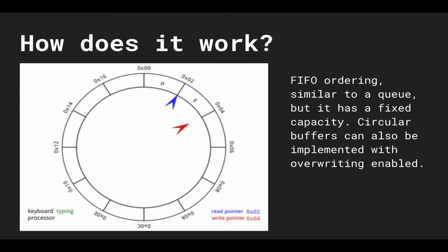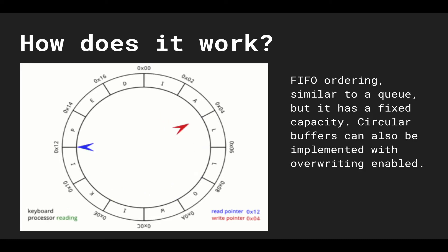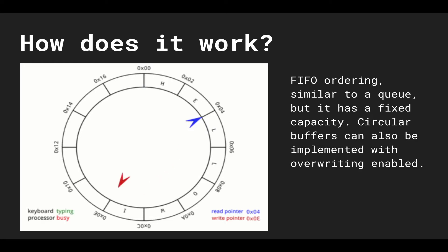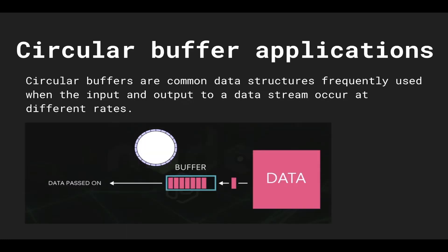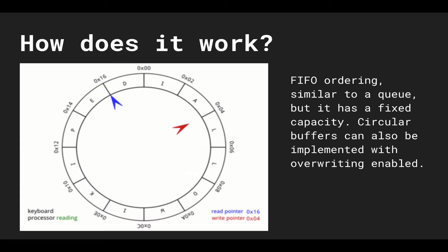The way it works is similar to a queue — it has first in first out ordering. Circular buffers can be implemented with overriding enabled or disabled. If it is disabled, then it's just a fixed size queue with no dynamic sizing. The more common approach when implementing circular buffers is with overriding enabled, and in a sense you can think of it as a queue that pushes out the first element that's about to be served.